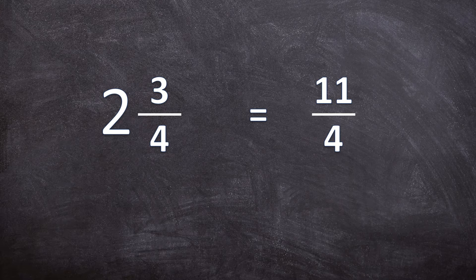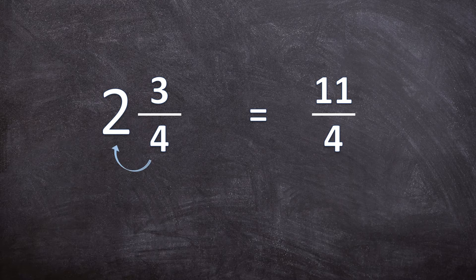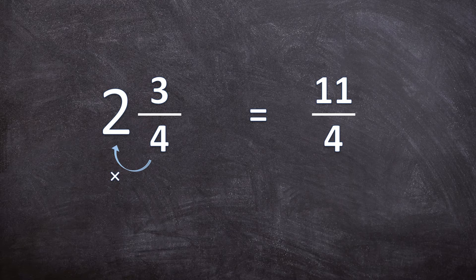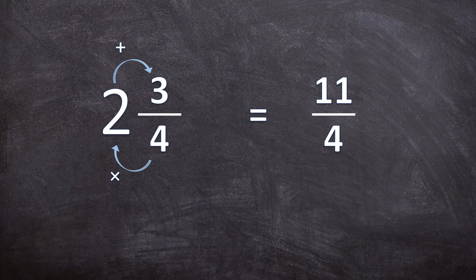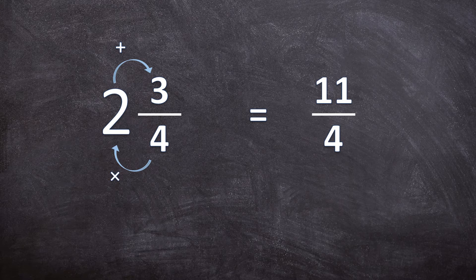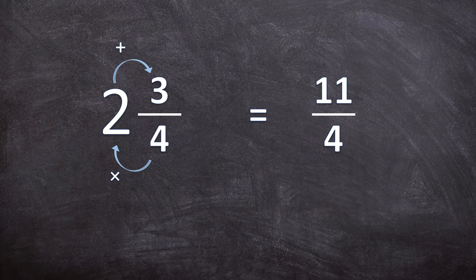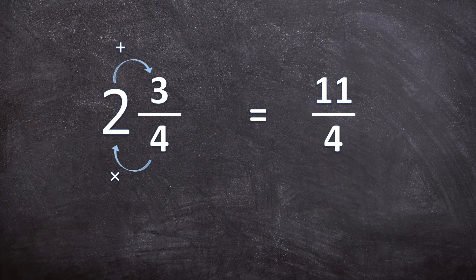First you're going to multiply the denominator with the whole number, so four times two. Then you're going to add the numerator. So four times two is eight plus three is 11. So the numerator is 11.